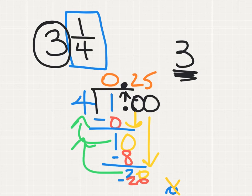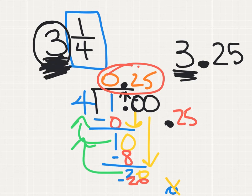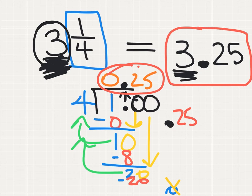I now take this decimal and add it to the end of my whole number, remembering that I had the three wholes the entire time. So, therefore, my mixed number of 3 and 1 fourth, or 3 and a quarter, is equivalent to my decimal of 3.25, or 3 and 25 hundredths.